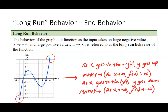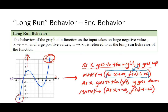Let's talk about how to express end behavior. As x goes to the right, my y value is going up — in math notation: as x approaches infinity, f(x) approaches infinity. As x goes to the left, my y value is going down — as x approaches negative infinity, f(x) approaches negative infinity.